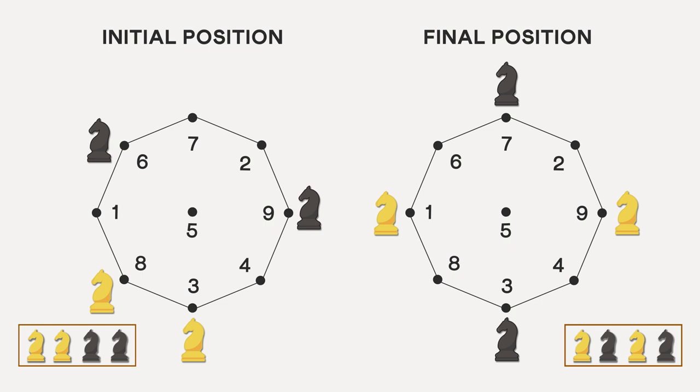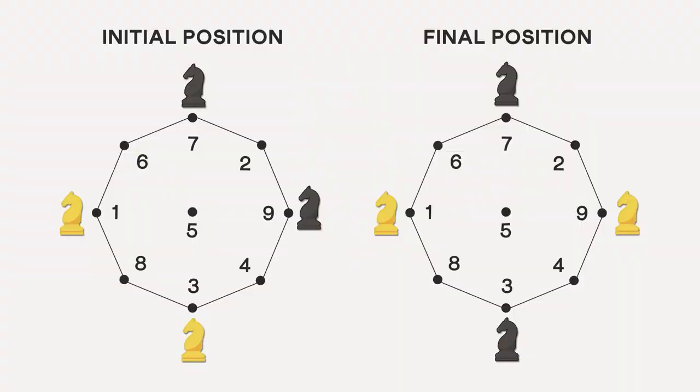But to change it to the final state requires a reordering of the knights to white, black, white, black. Is that possible? For this reordering to happen, two knights will have to cross each other somehow. For example, if this black knight, initially at position 7, wants to cross over the white knight at position 1 to slide between the two white knights, it would have to be at the same position as this white knight at some point. And that's not possible.